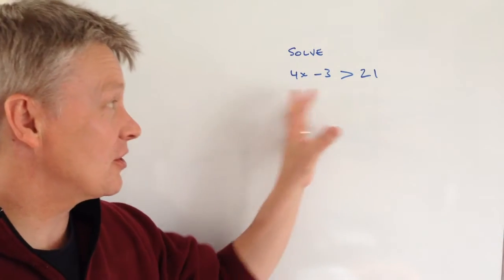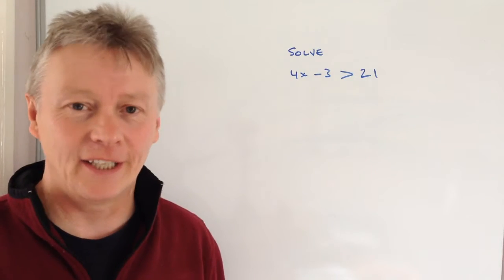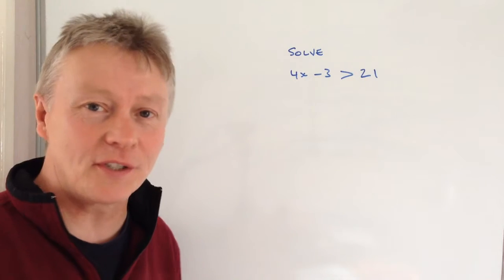Hi. In this video we're going to look at solving this inequality. We'll essentially treat it like a linear equation. So what we're saying is that 4x minus 3 is greater than 21.